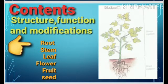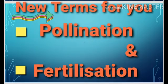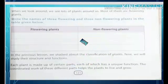The content of our chapter is very simple: structure, function, and modifications of each and every part — like roots, stem, leaves, flower, fruit, and seed. We will study all of these. Along with that, there are two new terms for you: pollination and fertilization.